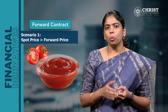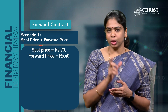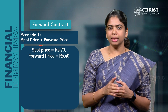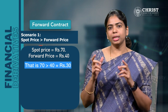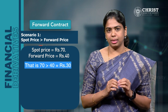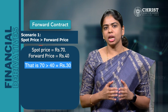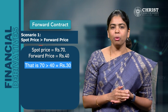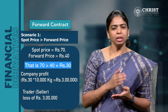Now let us consider three different scenarios. Scenario 1: where the spot price is greater than the forward price. If the spot price of tomatoes on the date of expiry is ₹70 per kg, let us calculate the profit or loss incurred by both the parties. In this case, the spot price on the date of expiry is much higher than the agreed price. Though the tomatoes are selling at ₹70 in the market, the trader is supposed to sell 10,000 kg of tomatoes at ₹40 to the ketchup company as per the forward agreement. Therefore, in this transaction, the buyer — the ketchup company — makes a profit of ₹3 lakhs and the trader loses the same amount.